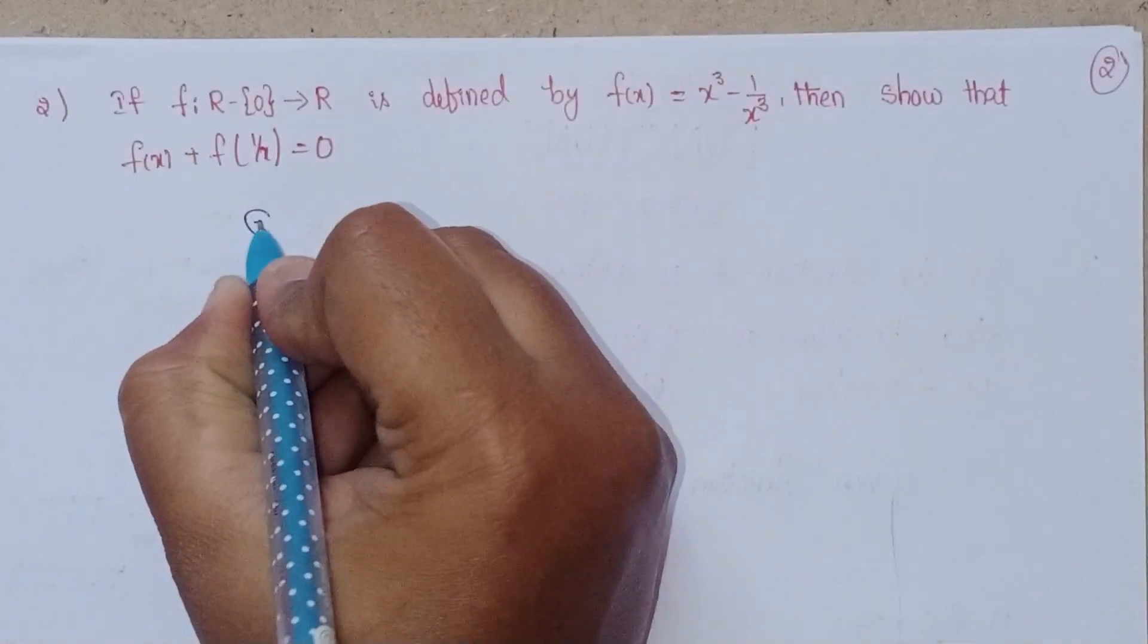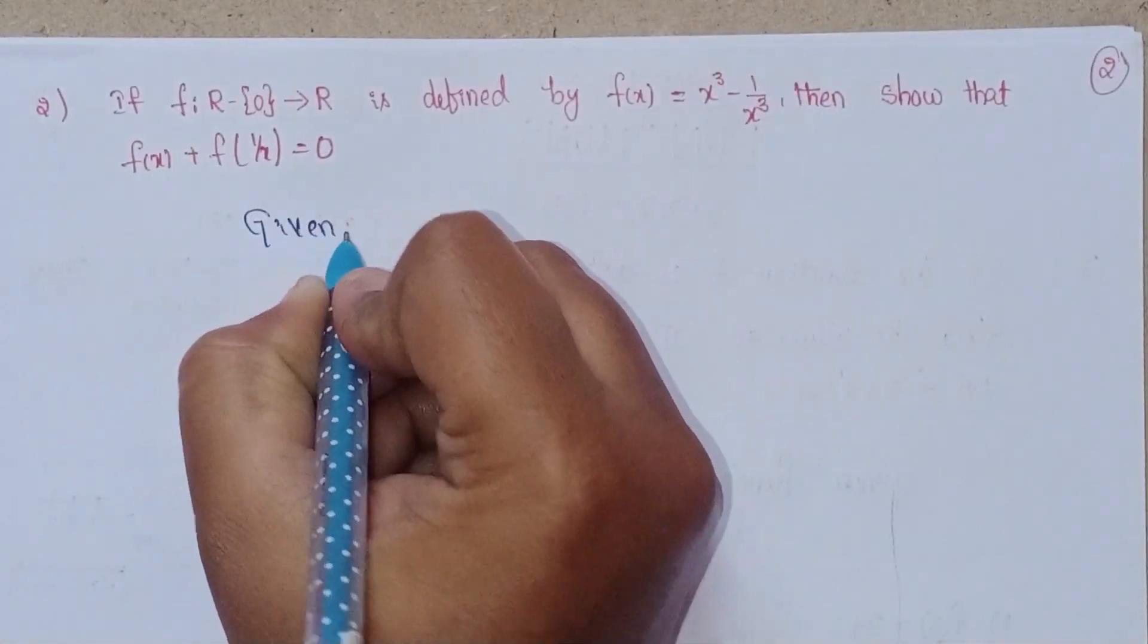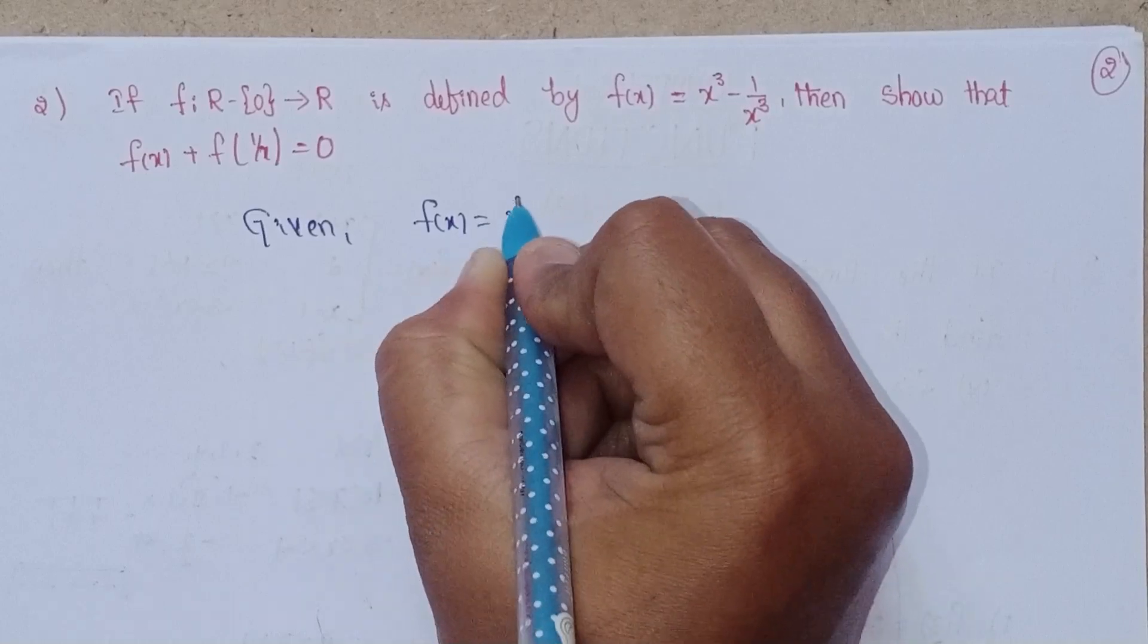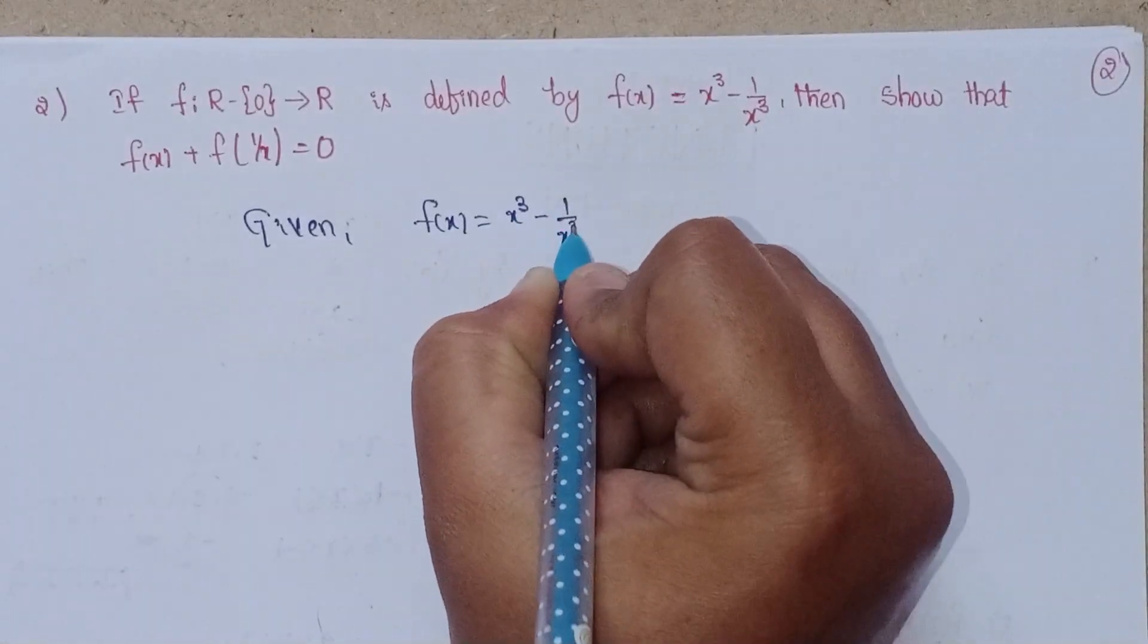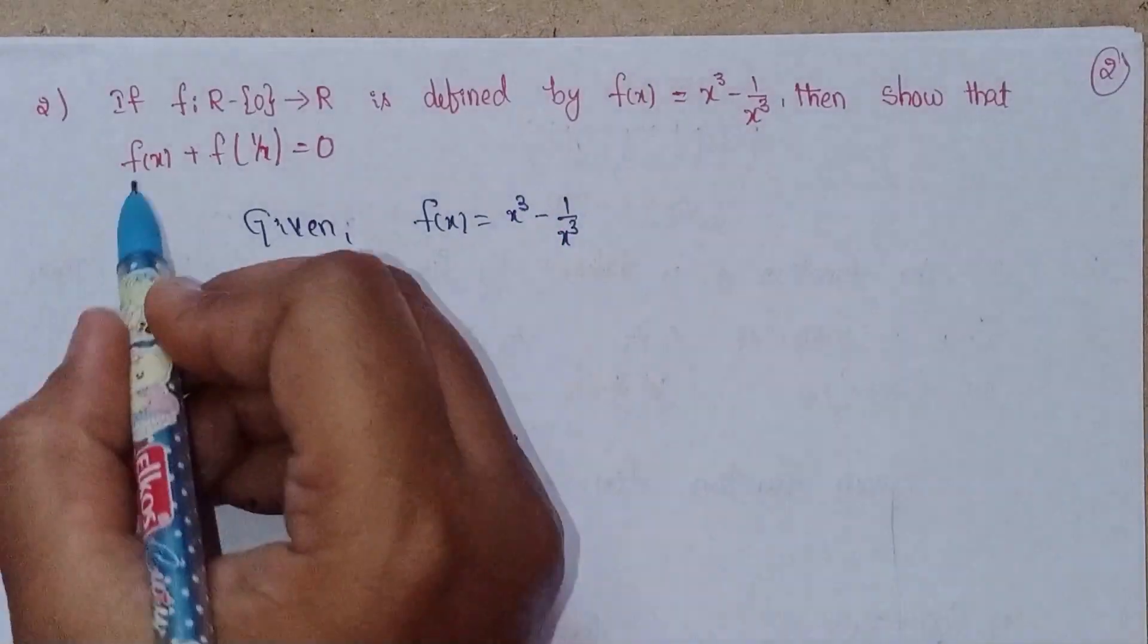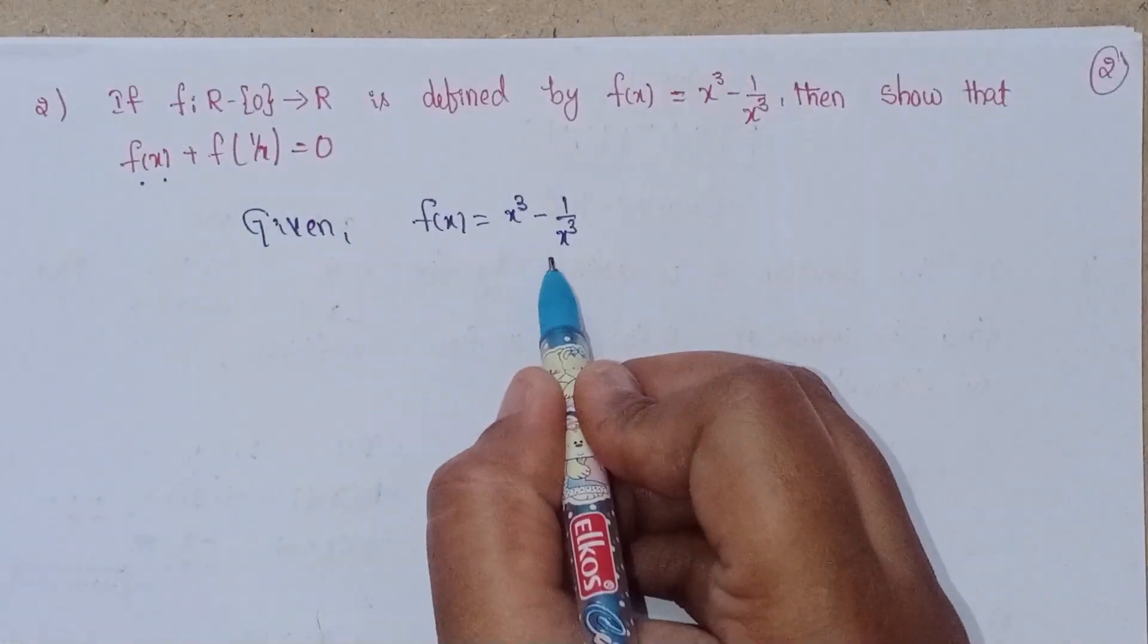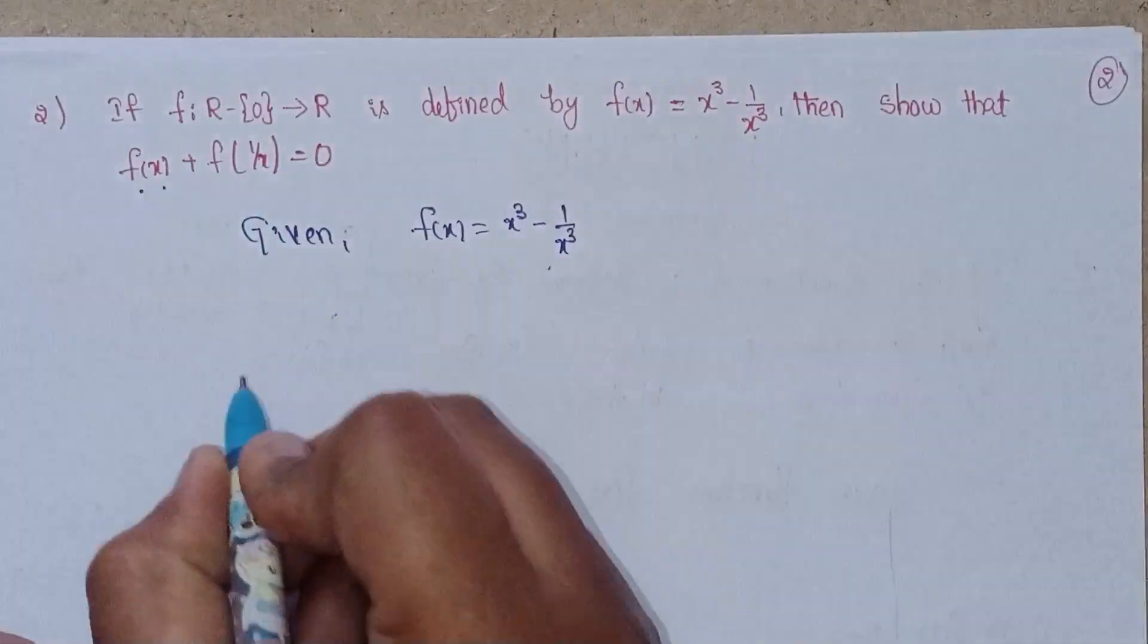Given: We have defined the function f(x) = x³ - 1/x³. First, we need to find out f(1/x).